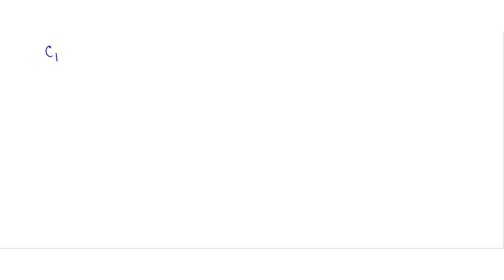In this problem we have to find the heat capacity for hot fluid and cold fluid. Heat capacity for hot fluid is given by C_H equals M_H multiplied by C_PH. After solving this we get the heat capacity for hot fluid as 0.639 kilowatt per kelvin.